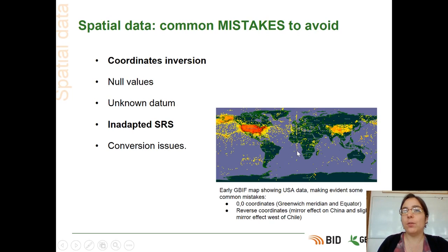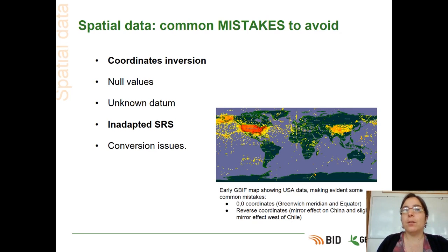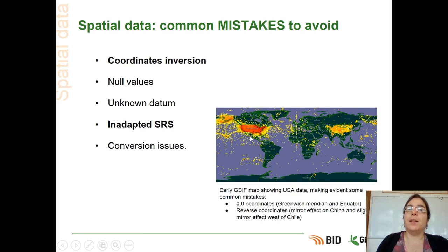You can also spot other mistakes on this map. For example, there is a vertical line in the center of the map — that is the Greenwich Meridian — due to the fact that some people, when they didn't know the coordinates, just put zero in the longitude field. You can also spot the same mistake for the equator line, which is zero for the latitude. And you can also see a small mirror effect of the United States data on the west of Chile, in the South Pacific, which is due to a coordinate inversion with the latitude. This map is a great example to show what can be wrong with geographical data.